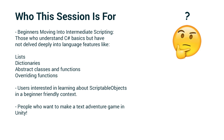But you have not delved deeply into language features like data collections — like lists or dictionaries — or using inheritance, or object-oriented concepts like abstract classes and functions, or overriding functions. This is also appropriate for users interested in learning about scriptable objects in a beginner-friendly context, and for people who want to make a text adventure game in Unity.